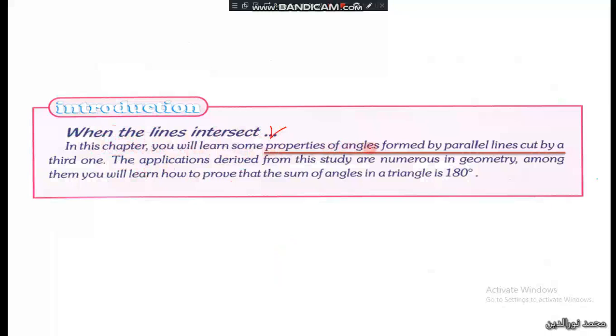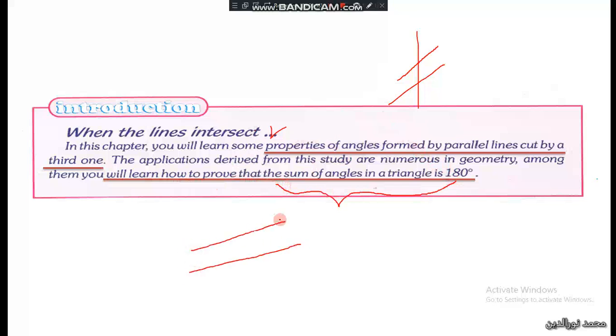properties of angles formed by parallel lines cut by a third one. The applications derived from this study are numerous in geometry. Among them, you will learn how to prove that the sum of angles of a triangle is 180 degrees. We are going to focus on two parallel lines cut by a secant or a third line, and from these properties we will learn that the sum of the angles of a triangle is 180 degrees.